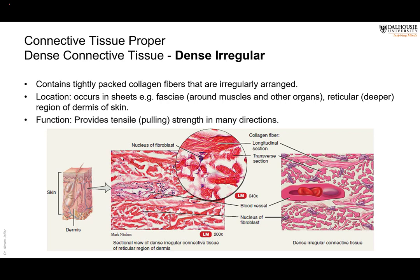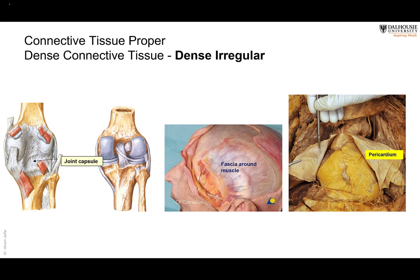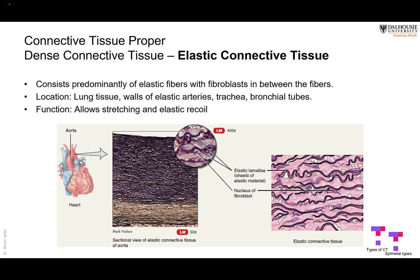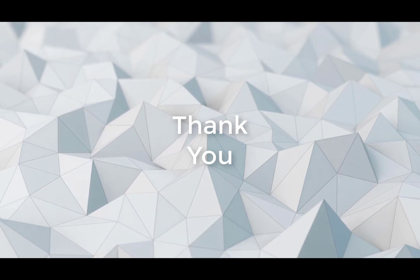Dense irregular connective tissue has bundles of collagen fibers arranged in different directions. This is found in the dermis, in capsules, and in the fascia of muscles. We also have elastic connective tissue, as mentioned, found in the lung and in the auricle.